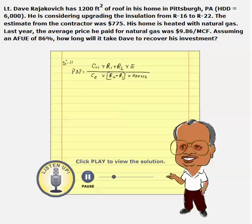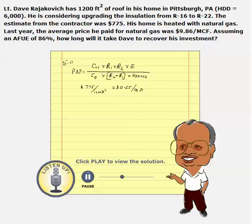Do we have all the pieces of information for this formula? Cost of insulation should be in dollars per square foot. Dave has got an estimate of $775 to cover a roof area of 1,200 square feet. To cover this area with insulation it costs $775, so the cost per square foot is 65 cents per square foot.